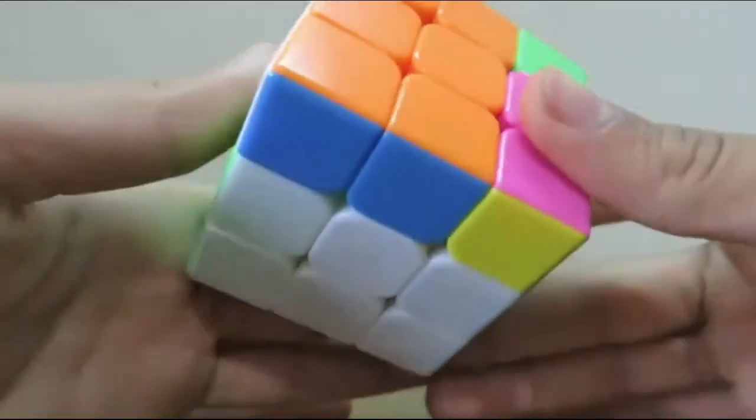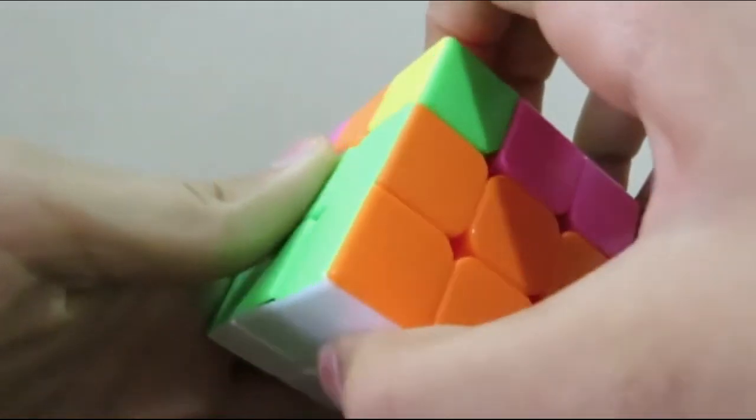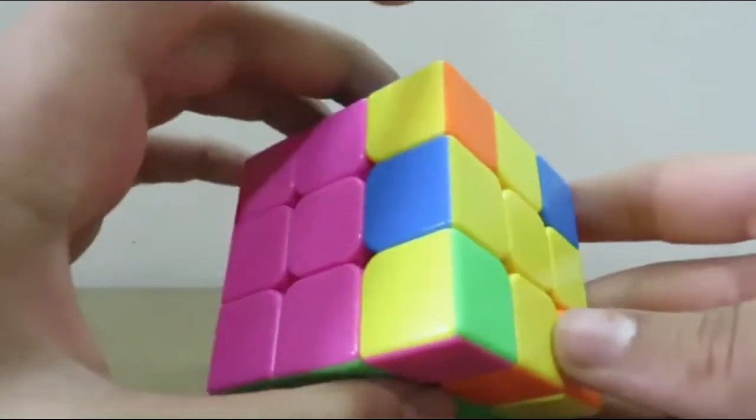And now we are putting our front face back to its position, so we turn it counter-clockwise. As you can see, one simple step and the cross is finished on the yellow side.